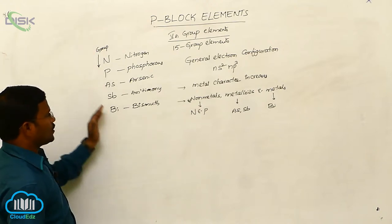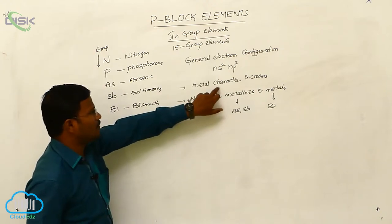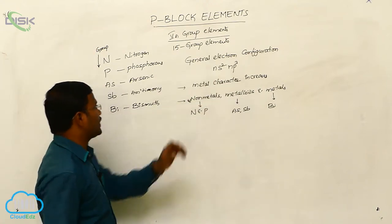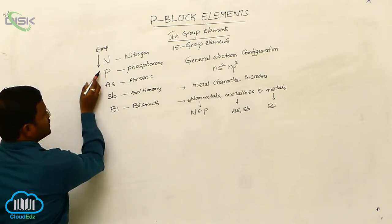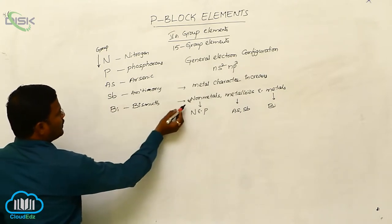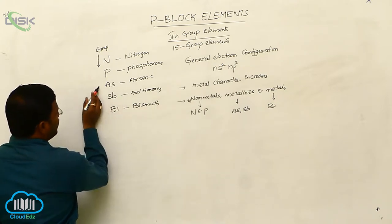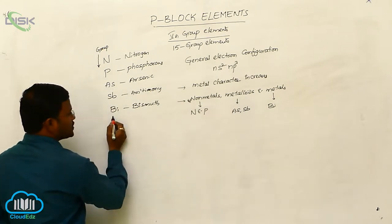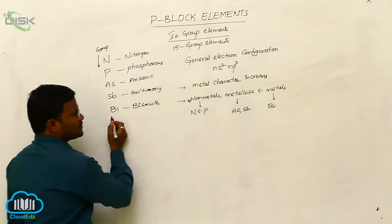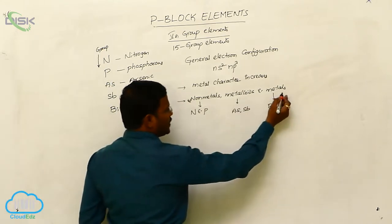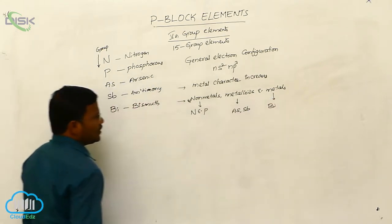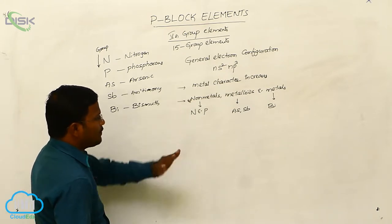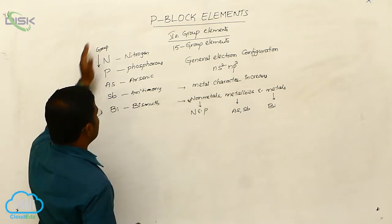From top to bottom, as per our concept, metal character increases. The first two elements are non-metals, the next two are metalloids, and the last element, bismuth, is purely metal. So metals, non-metals, and metalloids come under this category.